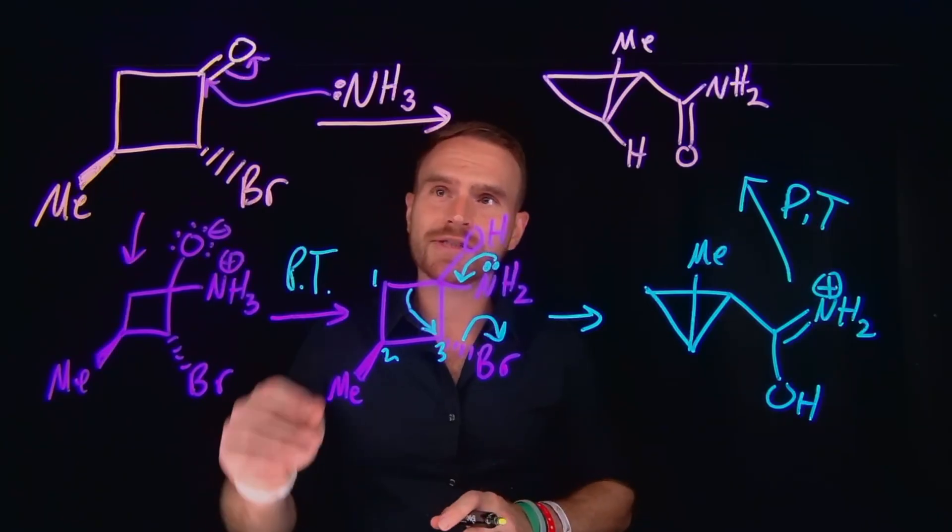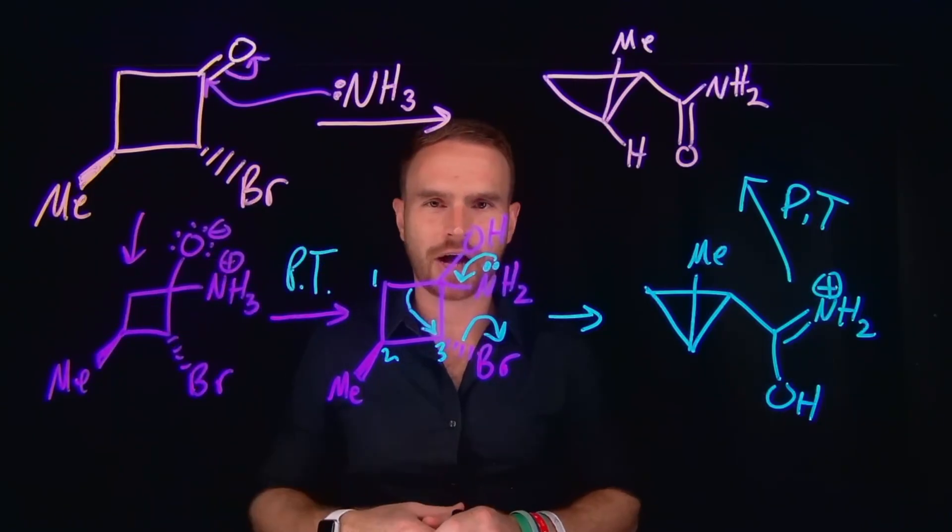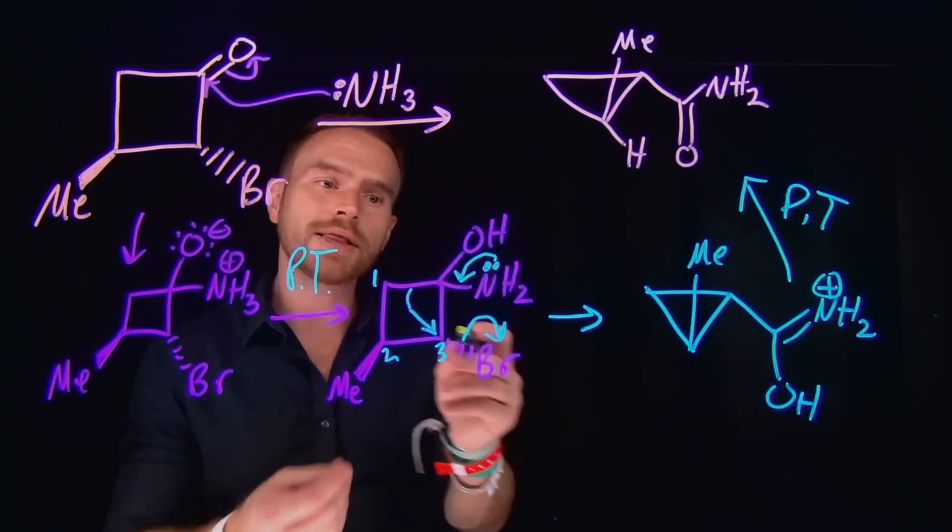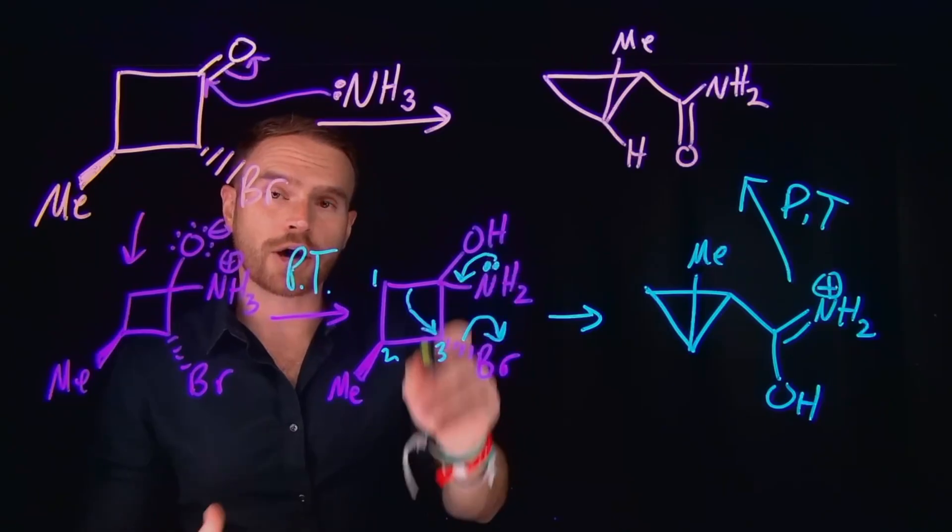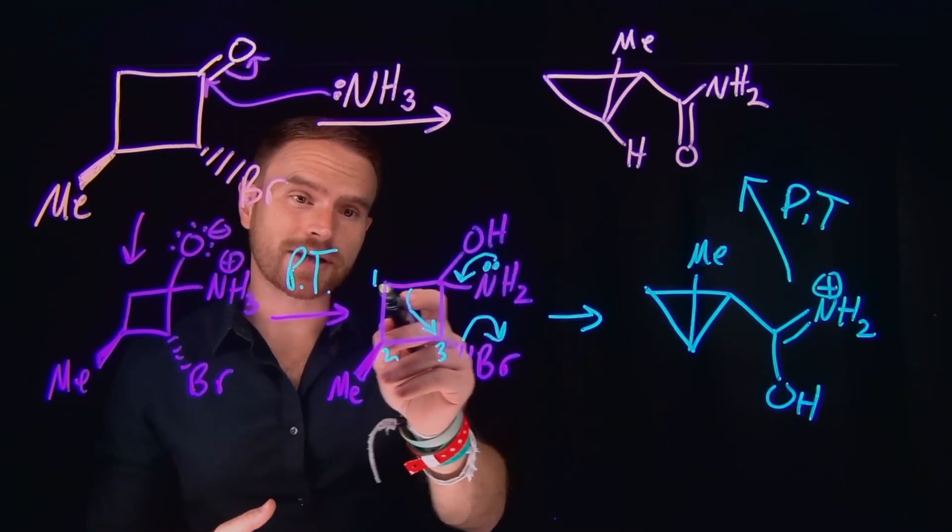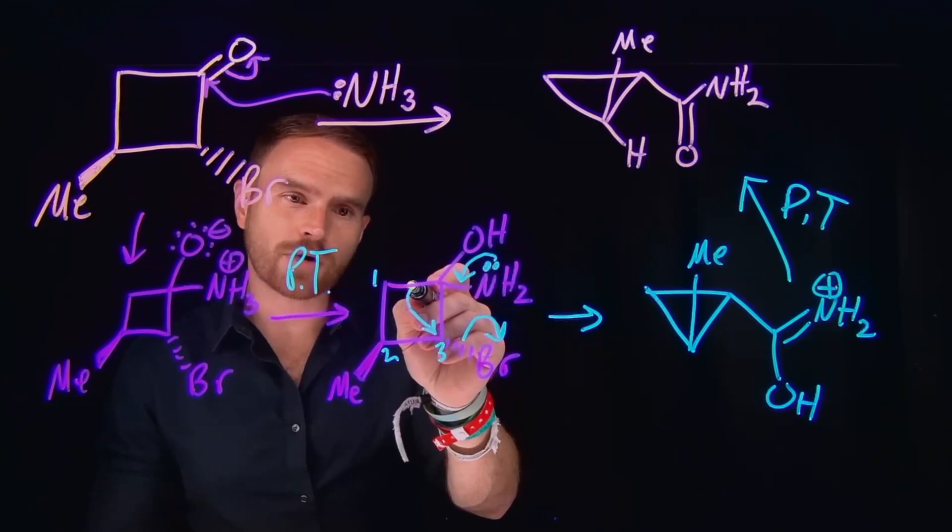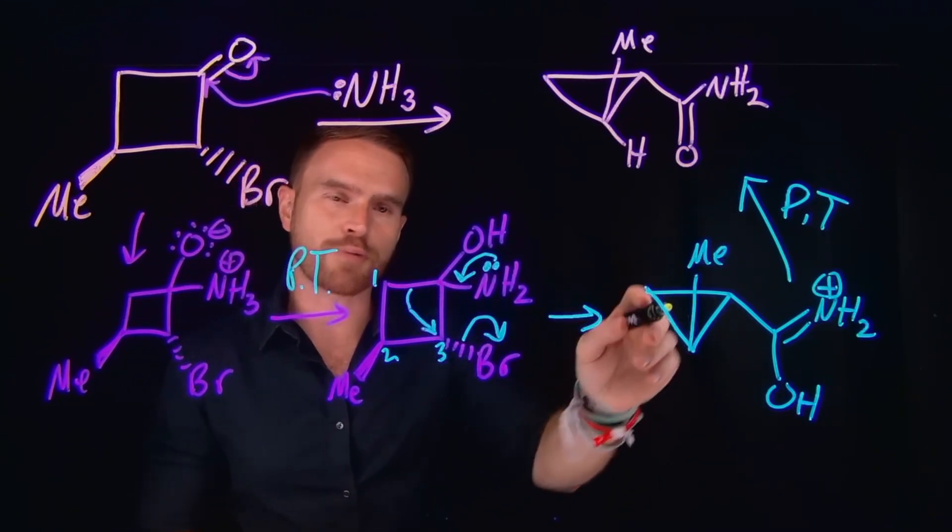So then to recap, what we have is a nucleophilic addition to a carbonyl group generating this negatively charged oxygen, subsequently undergoing a series of proton transfers that will allow us to eventually form an ammonium ion where the nitrogen lone pair of electrons will come down. And this will actually serve to break the carbon-carbon bond that gives rise to that four-member ring where these electrons will actually come down to help us form our three-membered ring or our cyclopropyl group.